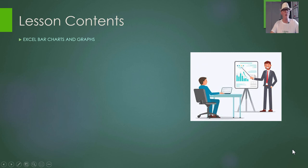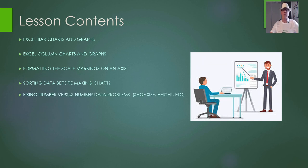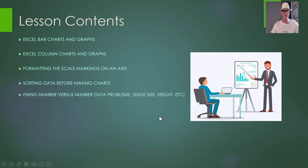So what we're going to cover in this lesson: Excel bar charts and graphs, Excel column charts and graphs. We'll show you how to format the scale markings on the axis, because sometimes Excel doesn't choose the best scale. Sometimes sorting data can make your charts look a lot better and we'll cover that. We'll fix the problem where Excel gets confused when you have numbers in both columns.